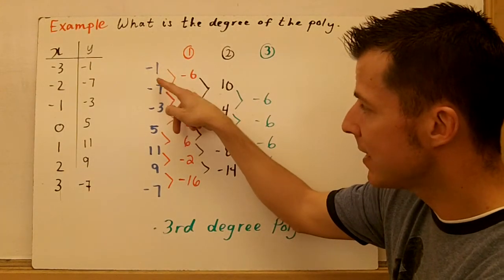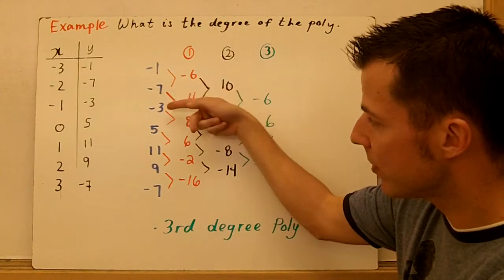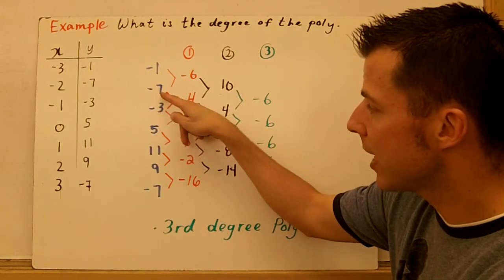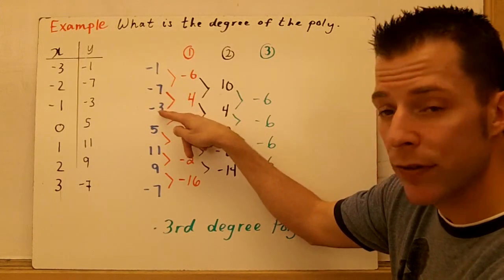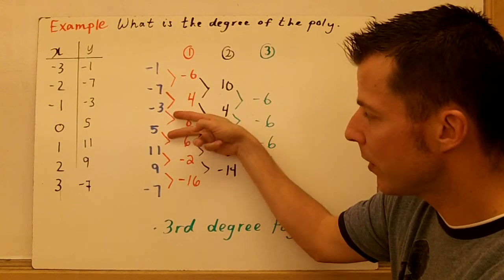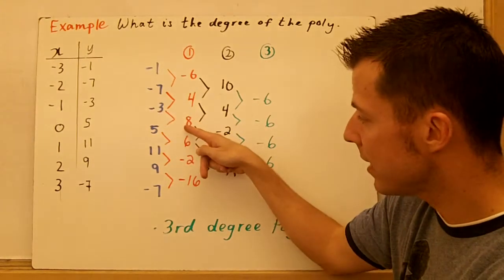So, -7 minus -1 becomes -6. And then I go to the second two numbers, -3 and -7. You always subtract the top number from the bottom. -3 minus -7 is 4. Again, 3 and 5. 5 minus -3 is 8.